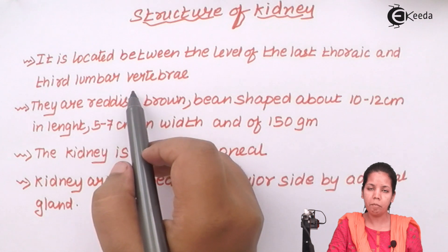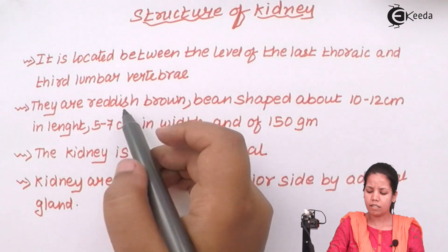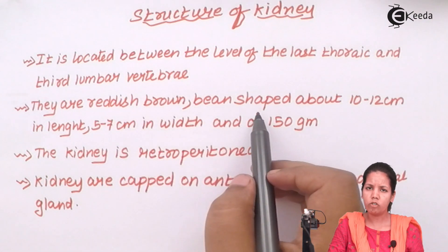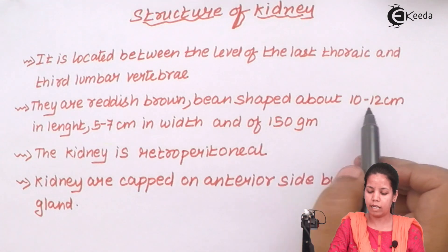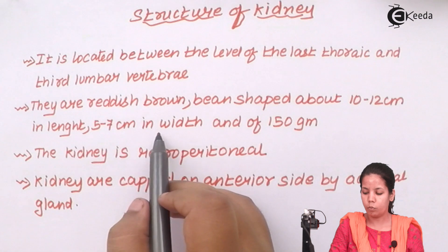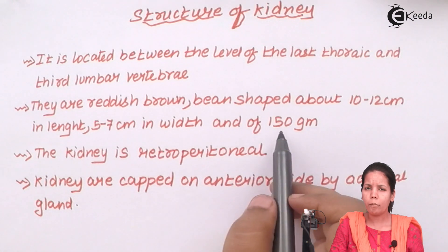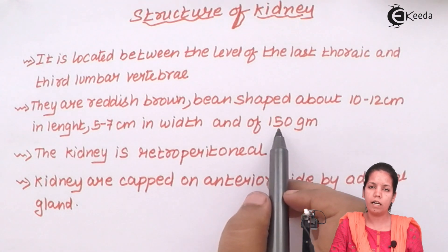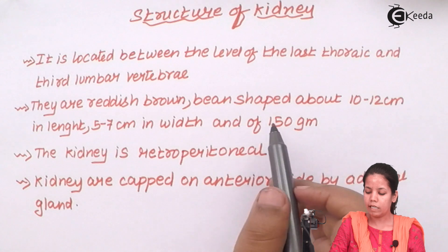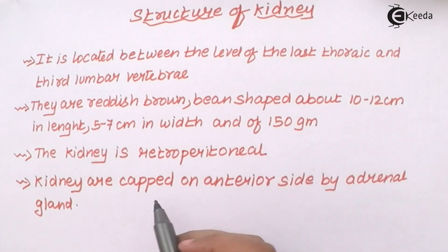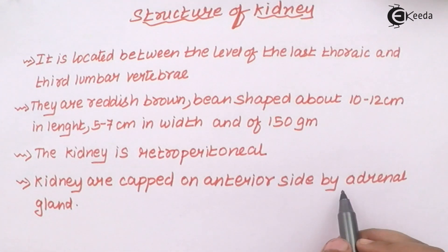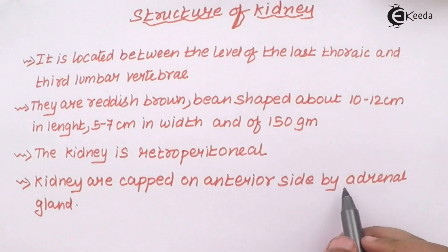The kidney is always present in pairs in human beings. It is reddish brown and bean-shaped, about 10 to 12 cm in length, 5 to 7 cm in width, and approximately 150 grams in adult human beings. The kidney is always retroperitoneal in nature. Kidneys are always capped by, or have the presence of, adrenal glands on the upper side.